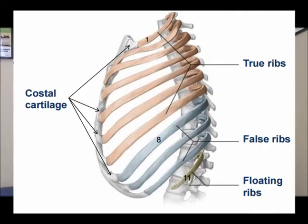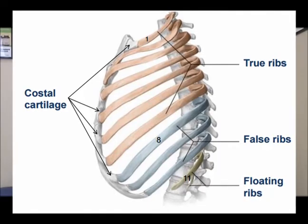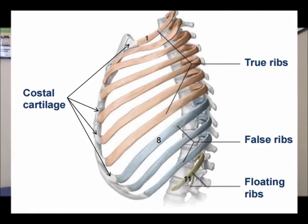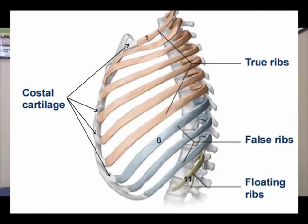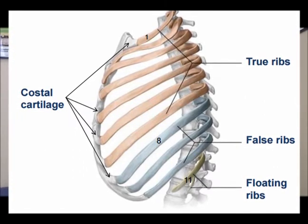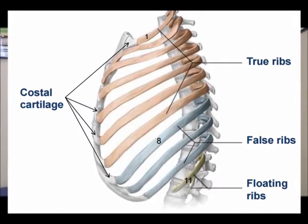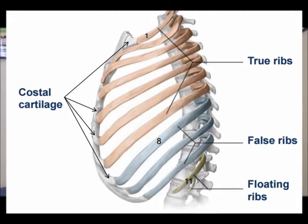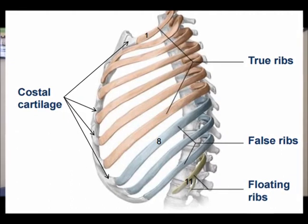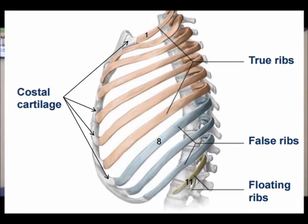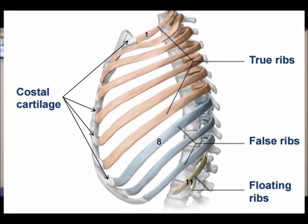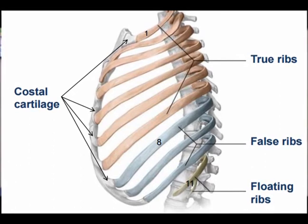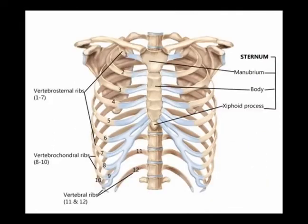These ribs originate on the spine and they wrap around and they attach to the sternum through the costal cartilage. So they are attached directly to the sternum through the costal cartilage. That's why they're known as the true ribs and the vertebral sternal ribs.